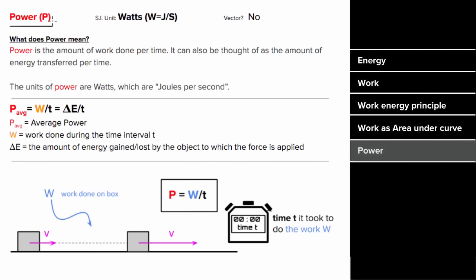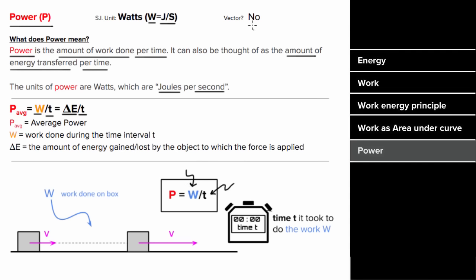What does power mean? In physics, power is the amount of work done per time, which can also be thought of as the amount of energy transferred per time — in other words, joules per second — and the name given to a joule per second is a watt. You can solve for power by finding work divided by time, or the change in energy divided by time. You can increase power by increasing the work done or decreasing the time it takes. Just like energy and work, power is not a vector.